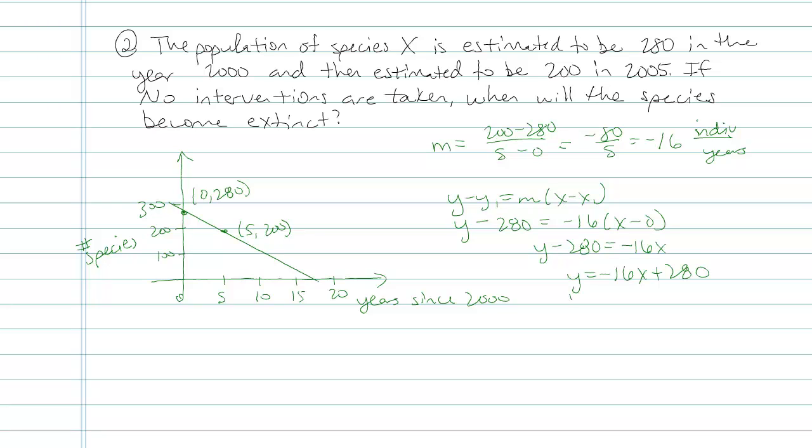Y represents number of species. It's equal to negative 16 times number of years since 2000, and then plus 280, because that's where the population was at the start of my study. Using that, I can find when will it be extinct. That's when my y value is 0.